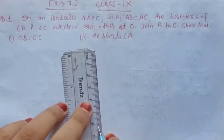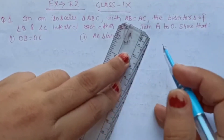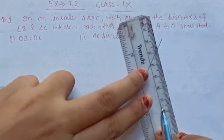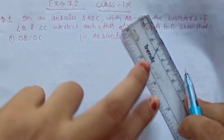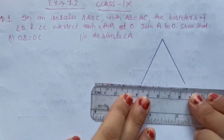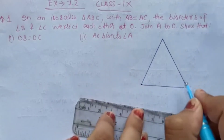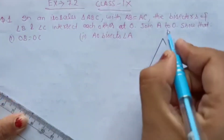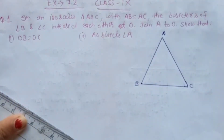And then what we need to show is OB equal to OC. Sabse pehle hum diagram bana lete hain. So hamari isosceles triangle ABC hai, jiske andar do sides equal hongi: AB aur AC. So yahan par banate hain. Yeh hamari triangle hogi ABC. Iska naam de dete hain: A, B aur C.